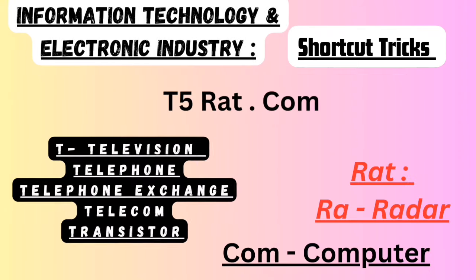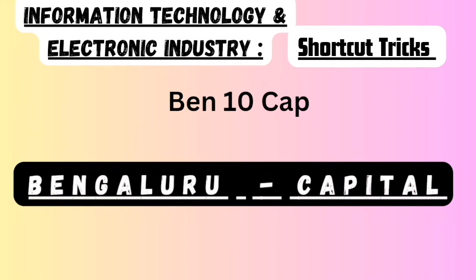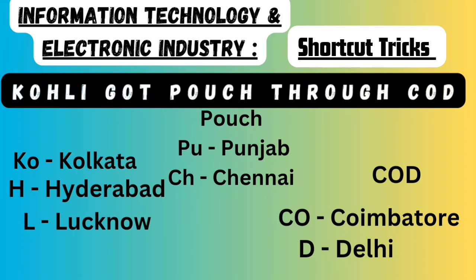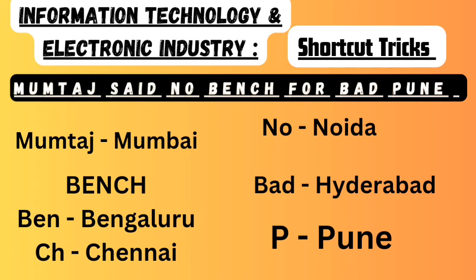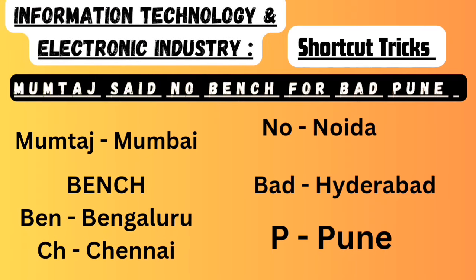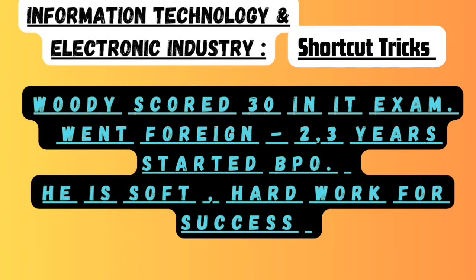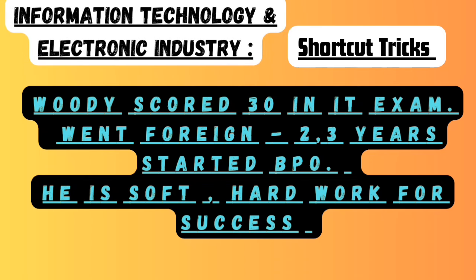Let's recall all the shortcuts once again: T5RAT.COM; Ben 10 Cap; Kohli got pouch through COD; Mumtaj said no bench for bad Pune; Udi scored 30 out of 30 in IT exam, went foreign, and within 2-3 years he started BPO — he is very soft-natured and his hard work is the reason for his success.